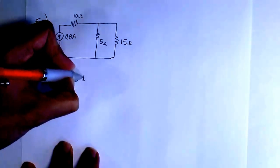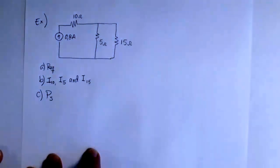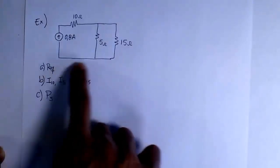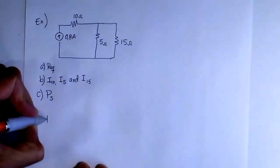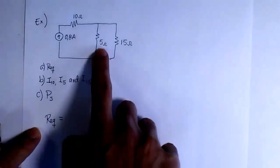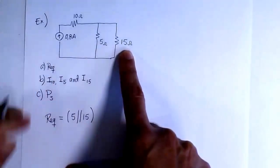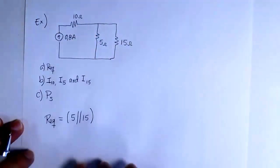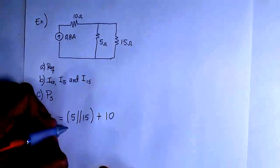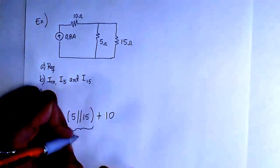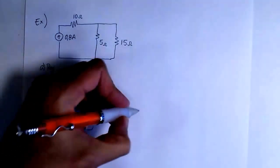We want to find the total resistance in the circuit R_equivalent, all the currents — I10, I5, and I15 — meaning the current flowing through each resistor, and the power provided by the source. We start with R_equivalent. We can see that 5 and 15 are in parallel, and their equivalent is going to be in series with 10. Applying the formula for two resistors in parallel, 5 and 15 gives 3.75 ohms, and adding 10 gives 13.75 ohms.